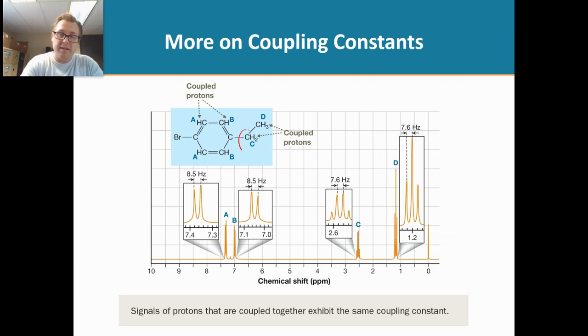And then if we look at C, we would predict that to split into a beautiful quartet, as shown there. So let's write that down. D is going to be a triplet. C is going to be a quartet. That's what we would predict.